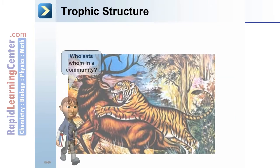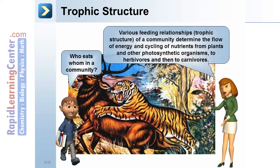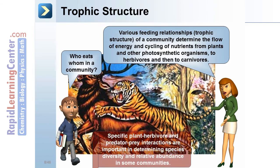Trophic structure refers to who eats whom in a community and the various feeding relationships. The trophic structure of a community determines the flow of energy and cycling of nutrients from plants and other photosynthetic organisms to herbivores and then to carnivores. Specific plant-herbivore and predator-prey interactions are important in determining species diversity and relative abundance in some communities.